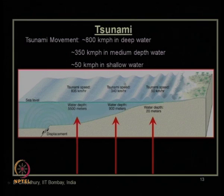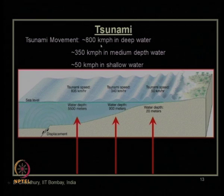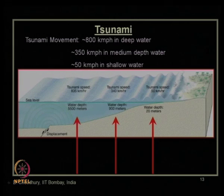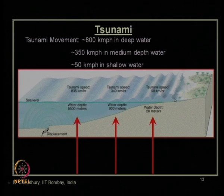The total energy flux of the tsunami remains almost constant, so as one component — speed — decreases, the height automatically increases when the tsunami reaches the coast. As a result, when the tsunami waves strike the coastal region, they come with a very large height, even 10 meters or much more.